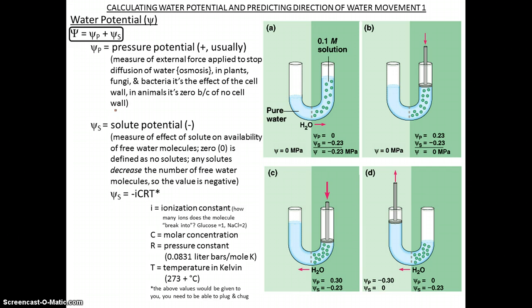Pressure potential is basically physical pressure. What we see in living organisms, for example in plant cells, is a cell wall that exerts physical pressure when water is in the vacuole. In animal cells, since there is no cell wall, pressure potential is usually zero.